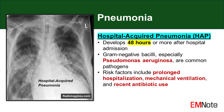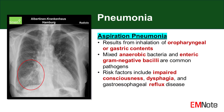Aspiration pneumonia represents a distinct category with unique pathophysiology and risk factors. This form of pneumonia results from the inhalation of oropharyngeal or gastric contents into the lower respiratory tract.